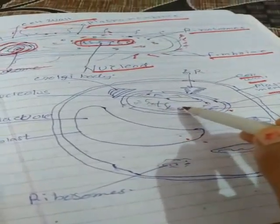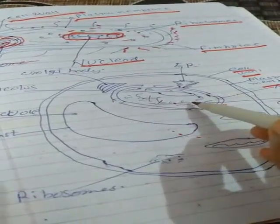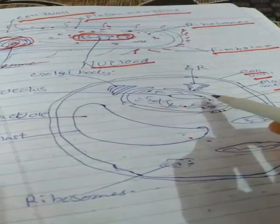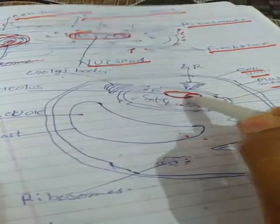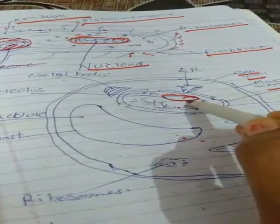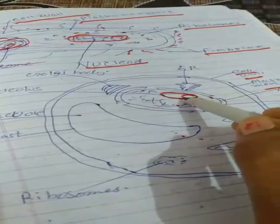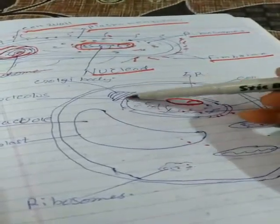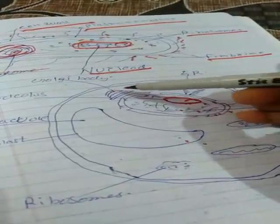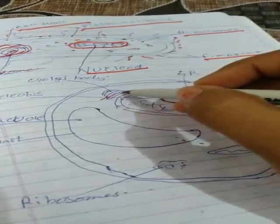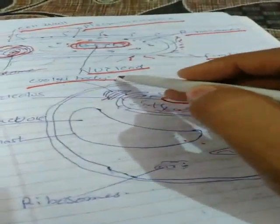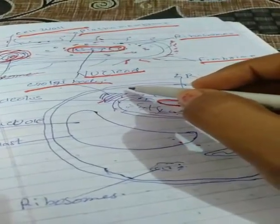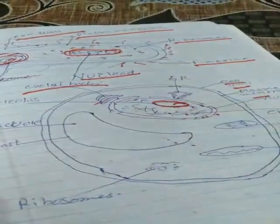Inside the nucleus, a jelly-like fluid structure called nucleoplasm is present. Inside the nucleoplasm, a structure called the nucleolus is present. Just near to the nucleus, a structure called the Golgi body is present — you can also call it the Golgi complex or Golgi apparatus.